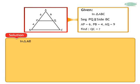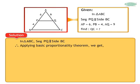Solution: In triangle ABC, segment PQ is parallel to side BC. Segment PQ divides side AB into AP and PB and side AC into AQ and QC. Applying basic proportionality theorem, we get AP upon PB is equal to AQ upon QC.